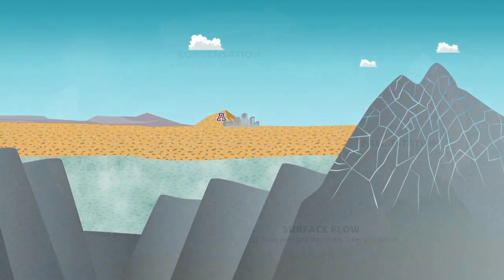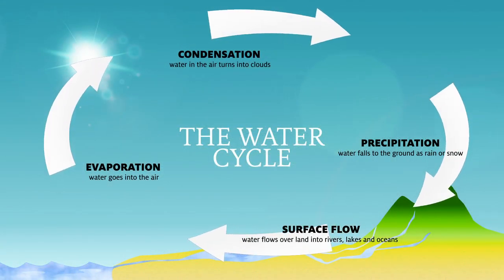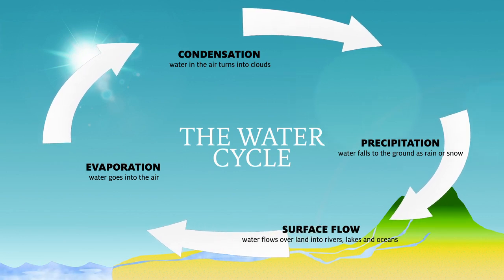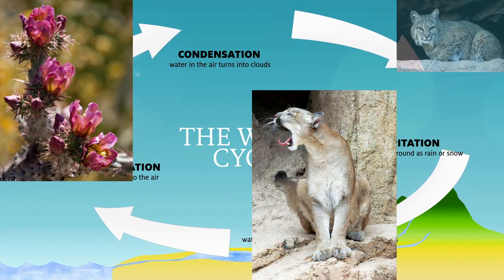The water cycle brings water to the land and makes life on land possible. We depend on the water cycle, and so do all the plants and animals around us.